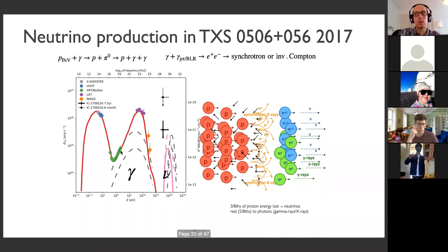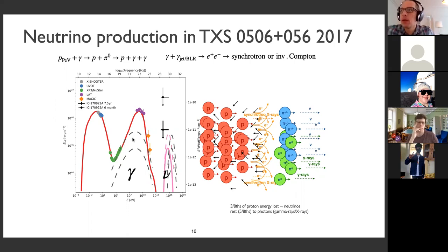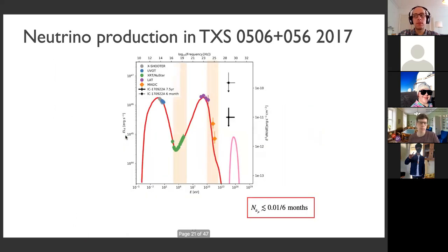We also have gamma rays from pion decays that interact inside the source, produce electrons and another photon cascade which peaks at MeV energies — we don't have any instrument there at the moment, so we have a bit more room. All these effects must be kept in control: we can't overshoot what we measure in terms of photons, and we can't attenuate the gamma rays in the source. This led to the upper limit of 0.01 neutrinos — a strong upper limit with very generous parameters.